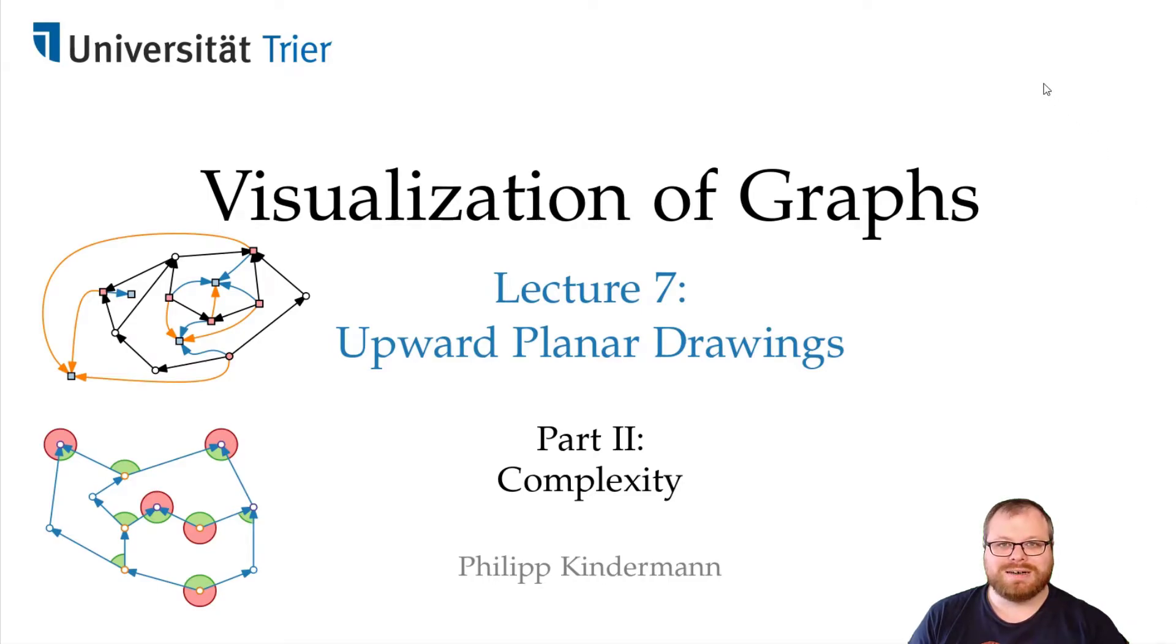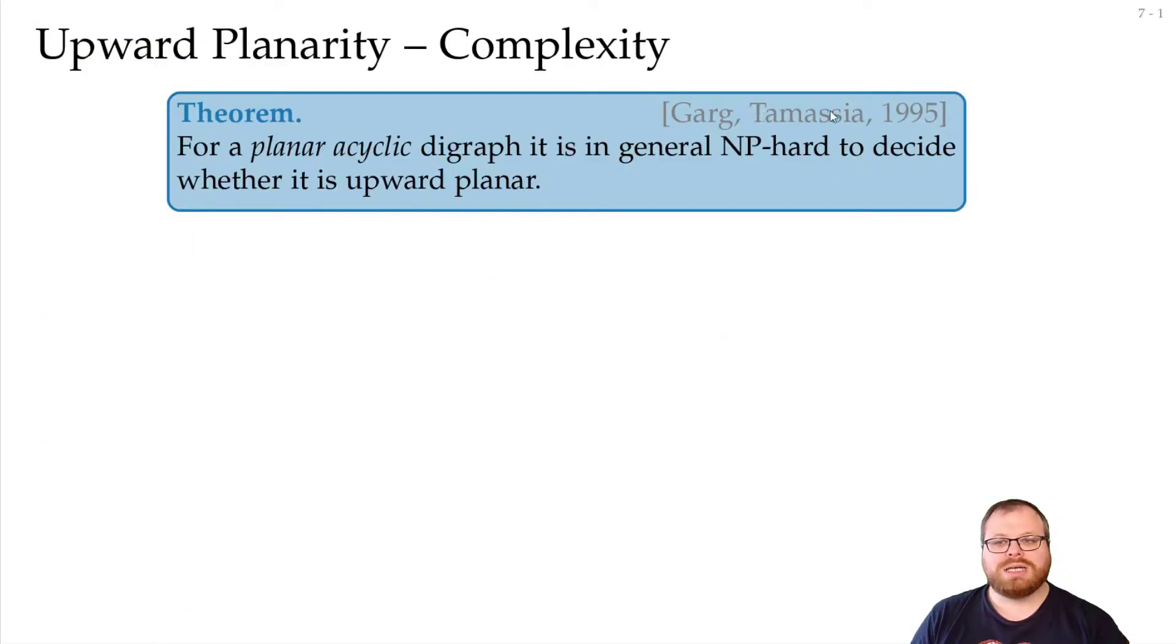We want to study the complexity of finding out whether a given planar digraph is an upward planar graph. There are a bunch of results for this in the literature. In 1995, Garg and Tamassia showed that for a planar acyclic digraph, it's in general NP-hard to decide whether it's upward planar.